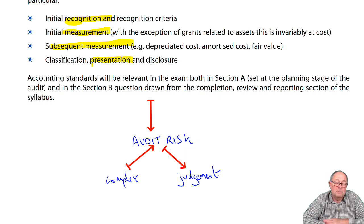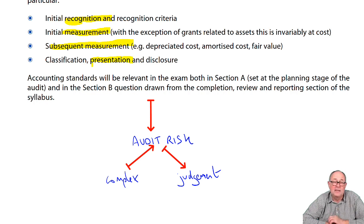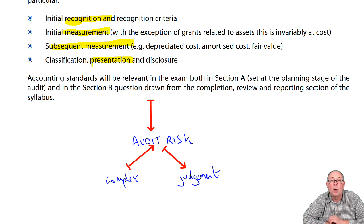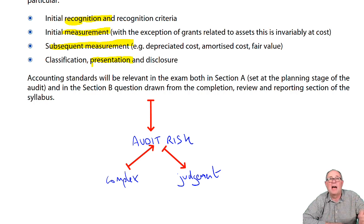The best thing is question practice. When you do the question practice, make sure you're using an up-to-date revision or practice and revision kit. The exams on the ACCA website may have old accounting standards — they're not updated. Particularly with things like leases, financial instruments, or revenue, you may end up looking at completely the wrong rules. If you have an up-to-date P&R kit, when you hit an accounting standard, just have a look at what the examiner has put in the answer — that gives you an idea of the level at which you're writing.